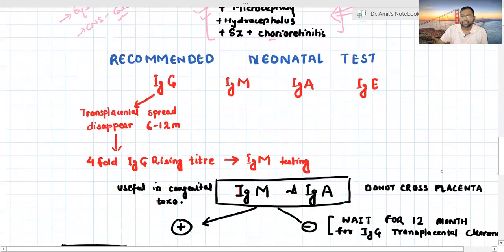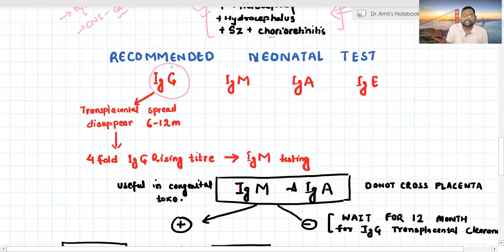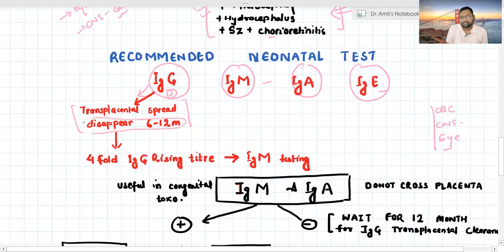What are the recommended neonatal tests? We have IgG, IgM, IgA, and IgE. I'm not talking about other basic investigations, CNS examination, eye examination. I'm just discussing diagnosis of TORCH. If the child is having IgG positive, usually it's transplacental spread because IgG can cross the placenta. The baby may have maternal IgG. It disappears around 6 to 12 months. If it is positive, we have to repeat. We have to go for repeated IgG titer. If the titer is 4-fold rising, the next step is to go for IgM testing.